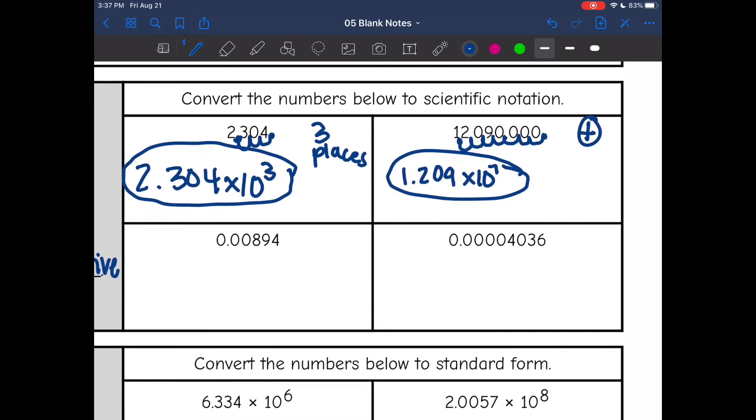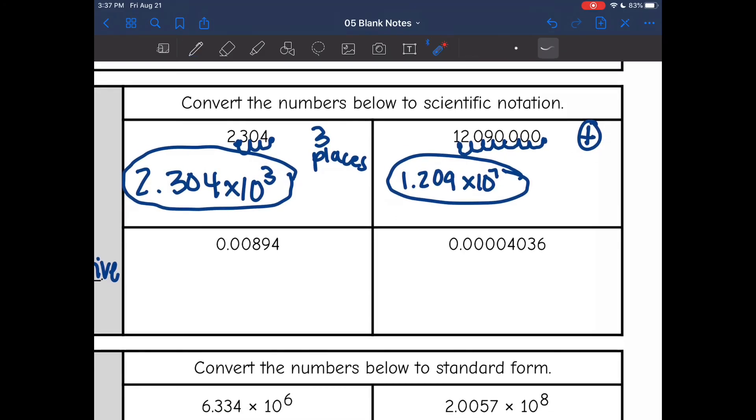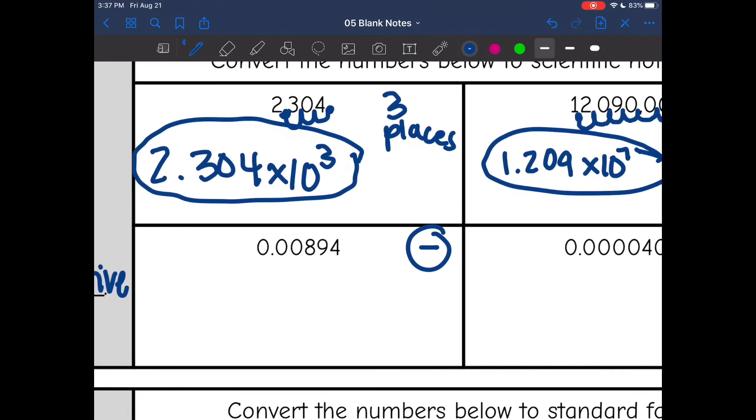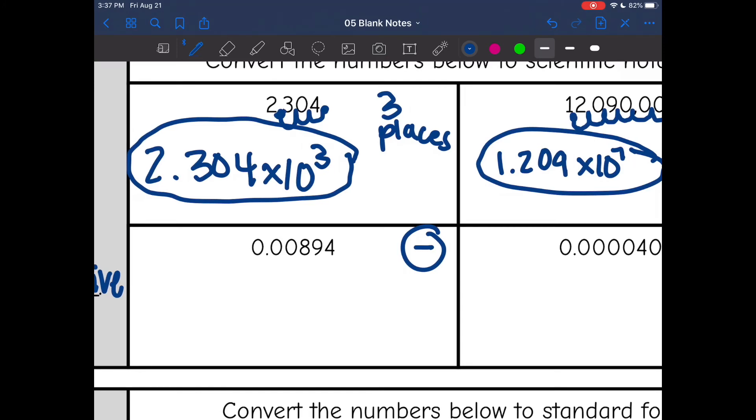Okay, now our next two examples that we're going to convert, if you notice, they are smaller than one, they both start with zero. So that means I will have negative exponents. It's the same process, though. First thing I'm going to do is move the decimal to where the digits would make a number between one and 10. So 8.94, that would be a number between one and 10. Always times 10. It's a negative exponent because it's small, and now I'm going to count. One, two, three. So 8.94 times 10 to the negative third is a scientific notation way to write this number.